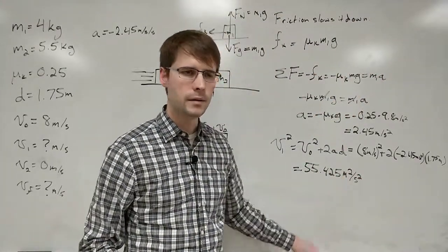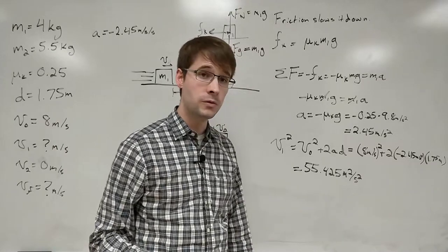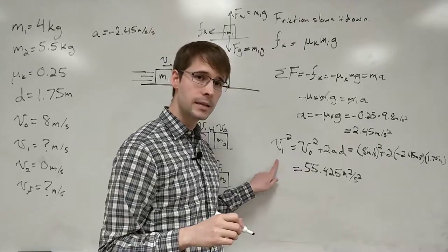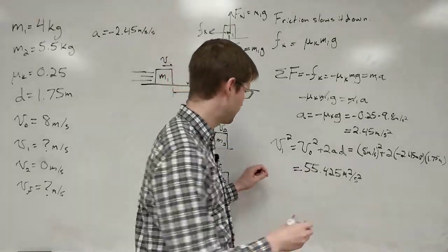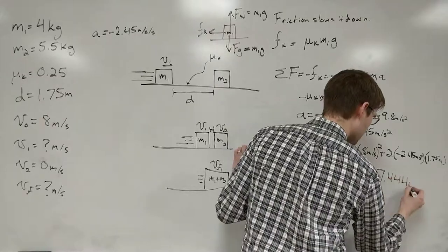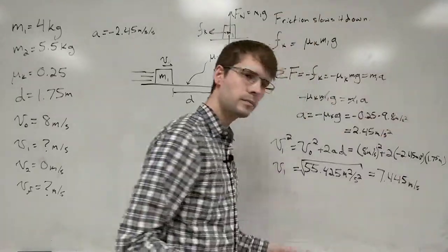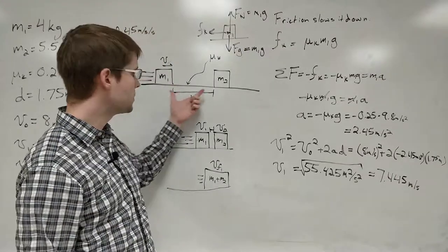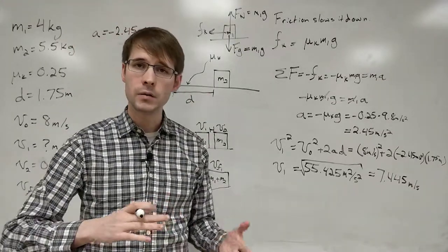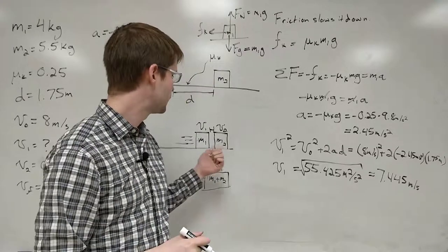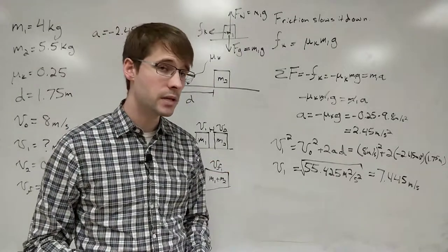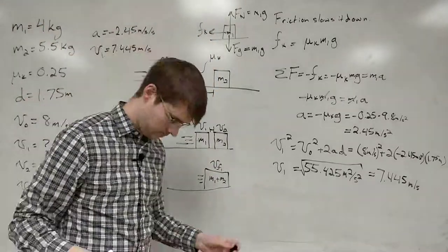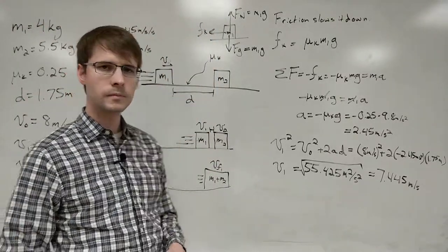So when we plug those numbers in, we get 55.425. And that's units of meters squared per second squared. So to find out this final velocity, we've got to take the square root of both sides. And what we get here is that this final velocity of this portion, where it's moving on its own, sliding with friction, is 7.445 meters per second. So let's add that to our notes.